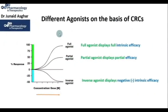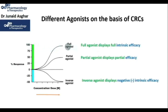Now let's see how different types of agonists show up in a typical concentration response curve. A full agonist displays full intrinsic efficacy, a partial agonist displays partial efficacy, whereas an inverse agonist displays negative intrinsic efficacy.